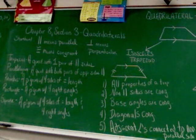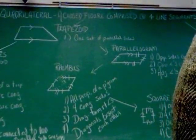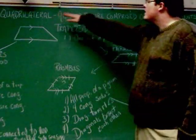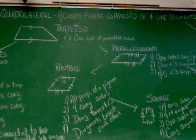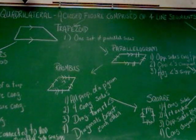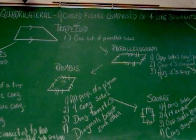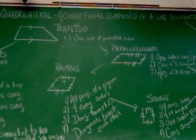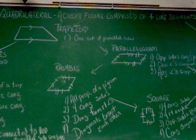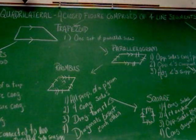Now we'll focus our attention on the center and the right side of the board, where we find the quadrilateral image map. There is one last definition thrown up here — the definition of quadrilateral. A quadrilateral is a closed figure comprised of four line segments. The sum total of the interior angles is 360 degrees.